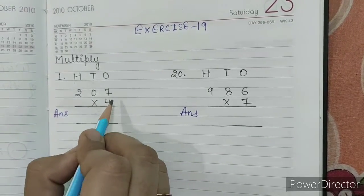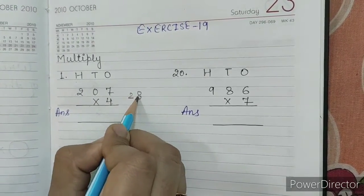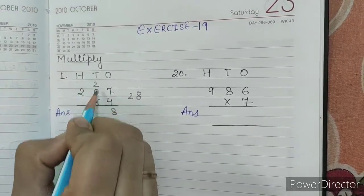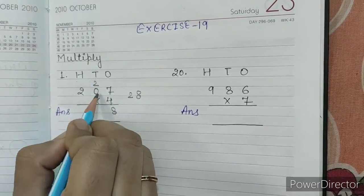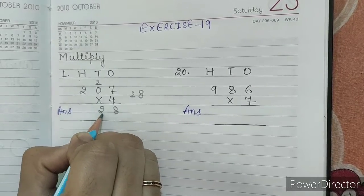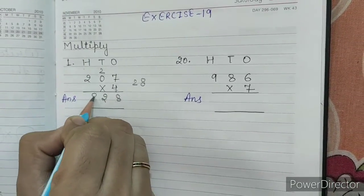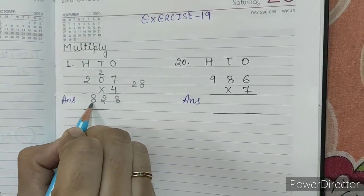207 into 4. So, 4, 7s are 28. 2, 8, 28. So, we will write 8. Carry over 2. 4, 0 is 0. Plus 2. It will come 2. 4, 2s are 8. So, our answer is 828.